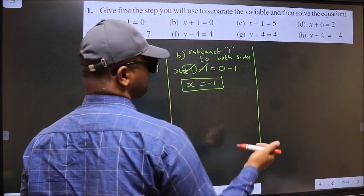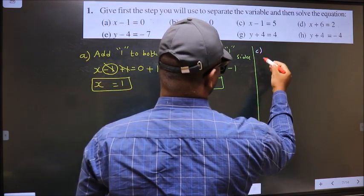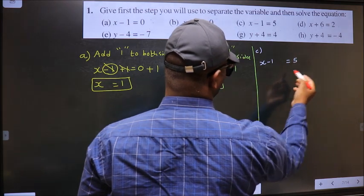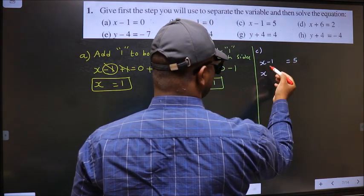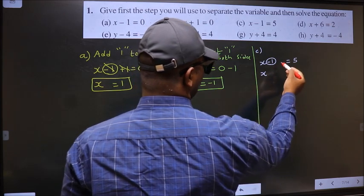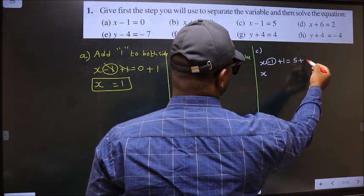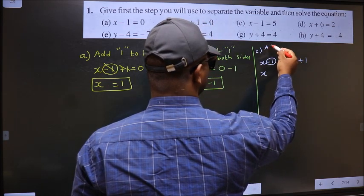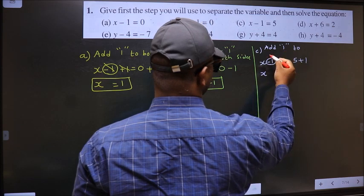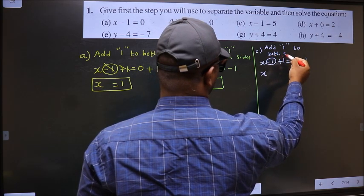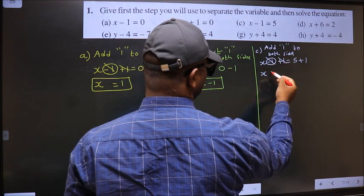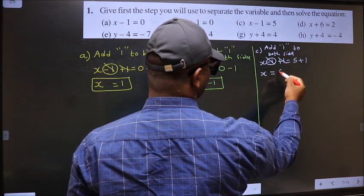Next, C. To get x value, we should remove minus 1 from here. To remove minus 1, you add 1 on both sides. So the step is: add 1 to both sides. Minus 1 plus 1 cancel out. x equal to 5 plus 1, which is 6.